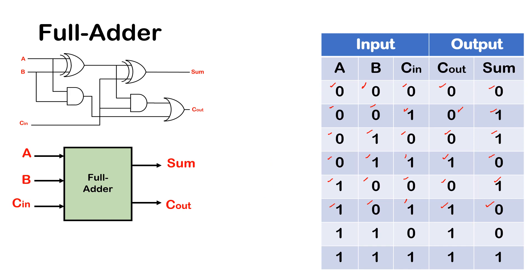Next, A=1, B=1. The partial sum is 0 with carry 1. Not forgetting C-in, we need to add it in. We have 0 for the sum — don't forget the carry — so sum is 0 and we have a carry.